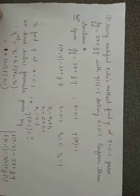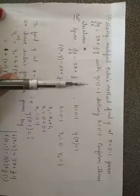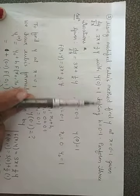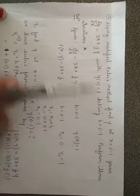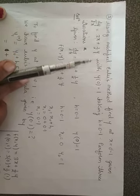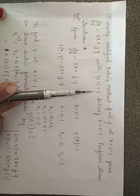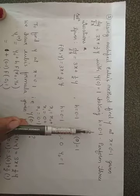Students, we will go with the third type of Euler's modified method problem. The question is: using modified Euler's method, find y at x equals 0.1, given dy by dx equals 3x plus y by 2 with y of 0 equals 1, taking h equals 0.1, perform 3 iterations.